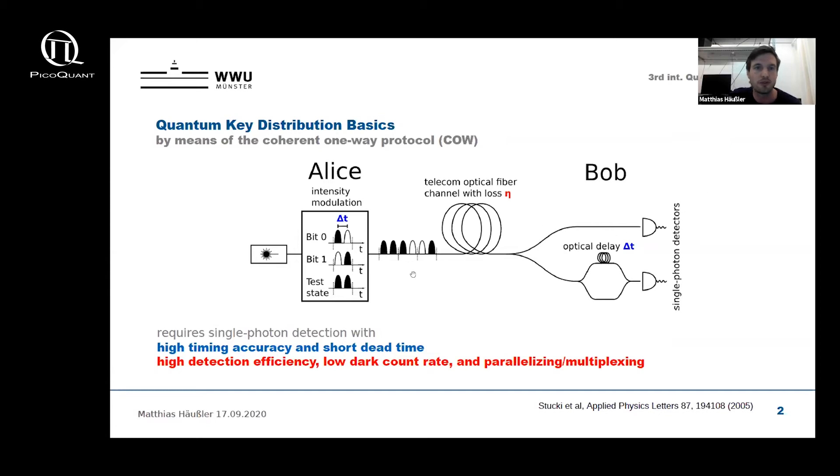From this simple scheme we can extract requirements for the detectors on Bob's side. First, the detector needs to have a high timing accuracy and a short dead time, and since this allows to choose a short time difference delta t, this then enables higher bit rates and with this also a higher generation rate for the secret key.